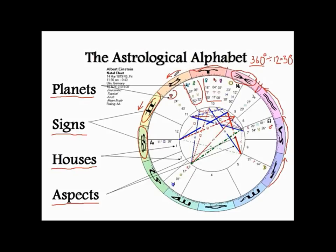You have 12 signs of the zodiac, each occupying 30 degrees. And 1 degree equals 60 minutes — it's composed of 60 minutes. Here, minutes has nothing to do with time; it is 1/60th of a degree. So you can see in this diagram, we have Pluto in Taurus at 24 degrees and 43 minutes.